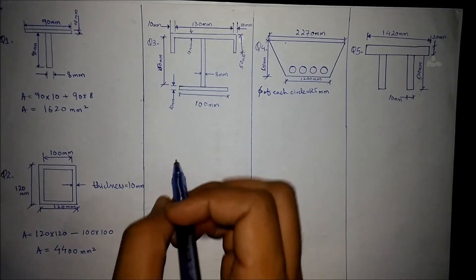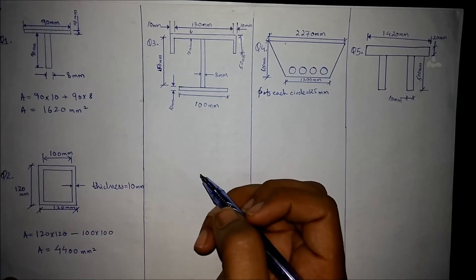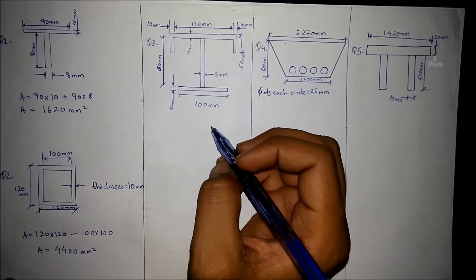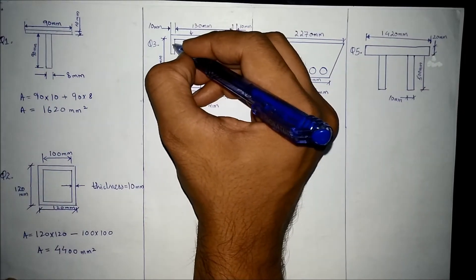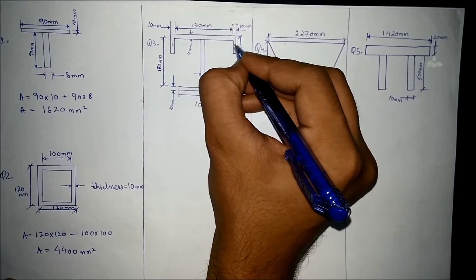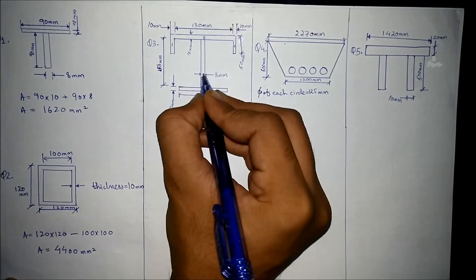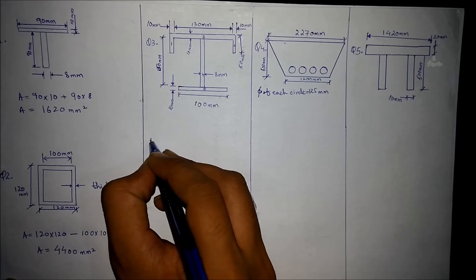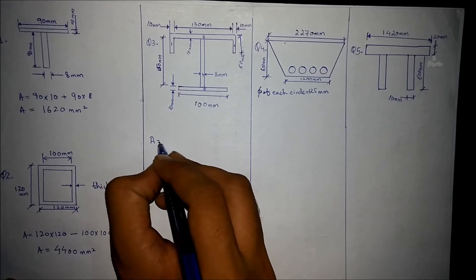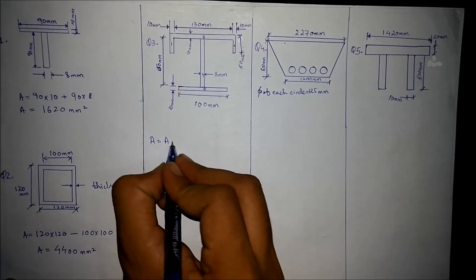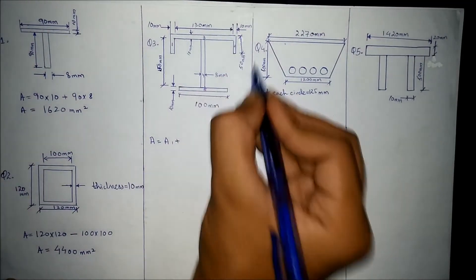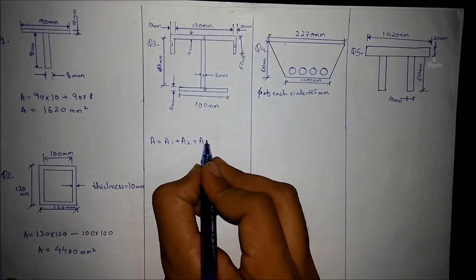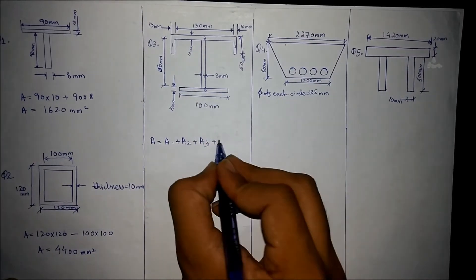Moving towards the third question, we have to break this cross section into various rectangles. Let's label them as 1, 2, 3, 4, and 5. The total area equals Area 1 + Area 2 + Area 3 + Area 4 + Area 5.